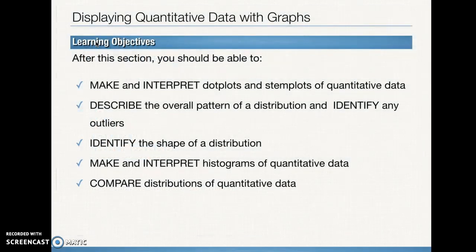We've got several objectives in this section, so we're going to make and interpret dot plots and stem plots. We're going to learn how to describe the overall pattern of a numerical data distribution and identify any outliers. We're going to be able to identify the shape of a distribution and have a little mnemonic to help us out. Make and interpret histograms of quantitative data and then compare distributions of quantitative data.